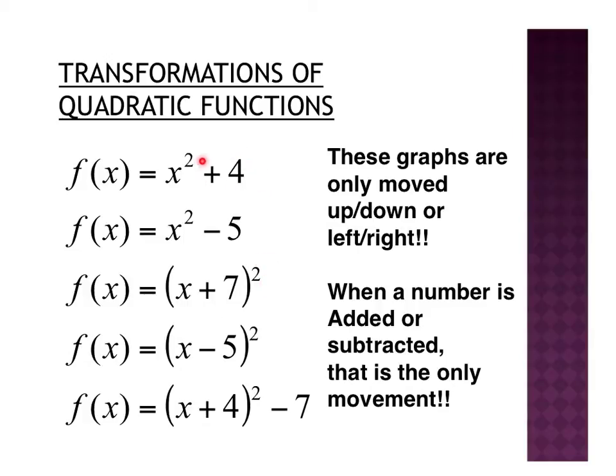Here, the number is on the outside of what's being squared, meaning this 4 is not being squared, but this 7 is being affected by this exponent here. Well, when the number is on the outside, it's moving up or down.